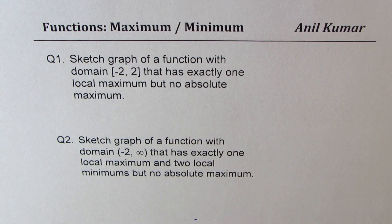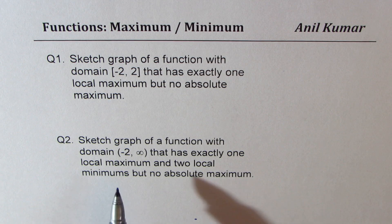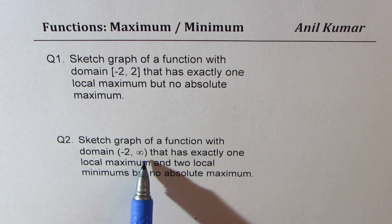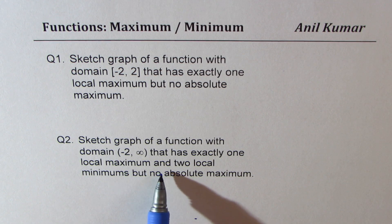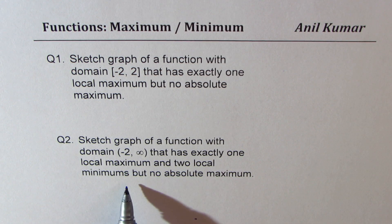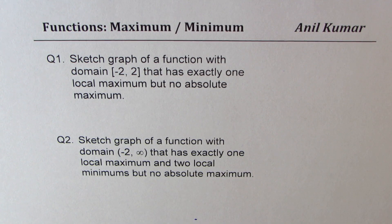Question 2 is sketch a graph of a function with domain of minus 2 to infinity that has exactly one local maximum and two local minimums but no absolute maximum. You can always pause the video, answer the question and then look into my suggestions.